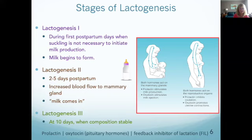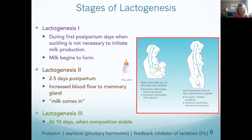Now getting into the science: lactogenesis is the process of developing the ability to secrete milk. It involves the maturation of breast tissue. After birth, lactogenesis is turned on, and we talk about it in three stages.